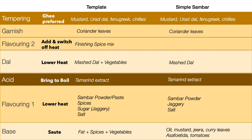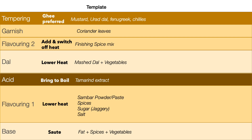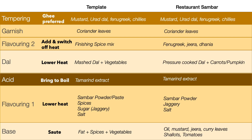For a very simple sambar: the base is oil, mustard, cumin, curry leaves, asafoetida, and tomatoes. For flavoring one, add sambar powder, jaggery, and salt, then add tamarind water, increase heat, and bring to a boil. Once the raw smell of tamarind has gone, add mashed dal. There is no flavoring two in this case. Switch off heat, add coriander leaves, and do a tempering with mustard, urad dal, fenugreek, and chilies.